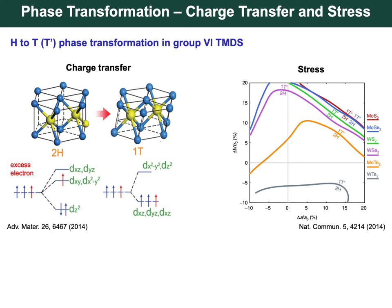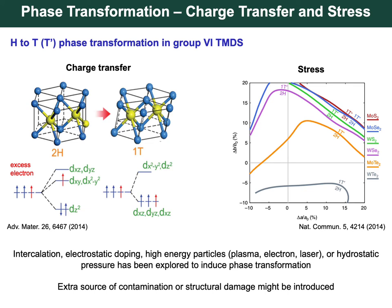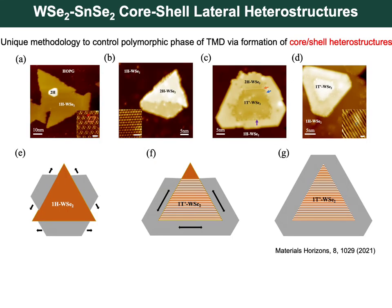The other route is applying stress or strain, though the tensile strain required can be quite significant. Experimentally, intercalation, electrostatic doping, high-energy particles such as plasma, electron beams, and lasers, or hydrostatic pressure have all been explored to induce this phase transformation. A potential problem is the introduction of contamination or structural damage to the system.